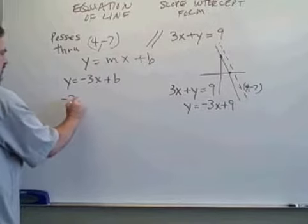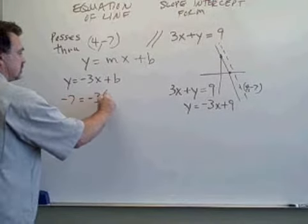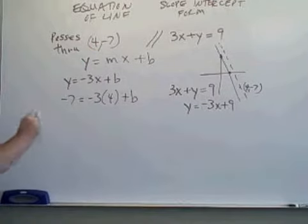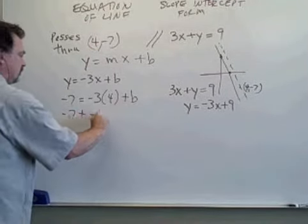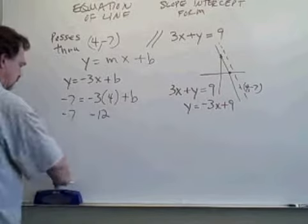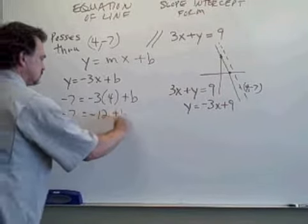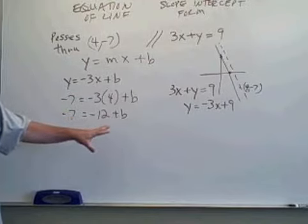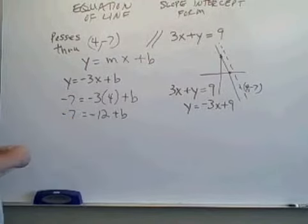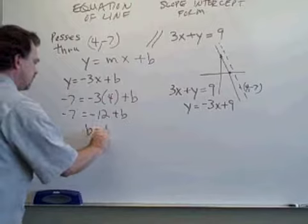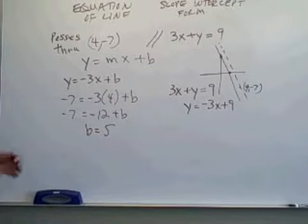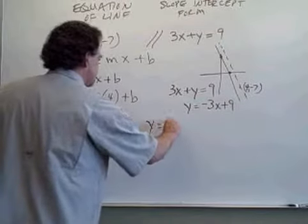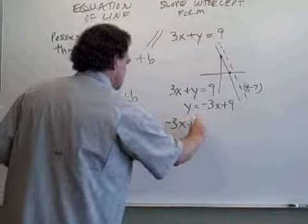y is negative 7. When x is 4, negative 7 equals negative 12 plus b. Adding 12 to both sides, I get b equals 5. And our equation is y equals negative 3x plus 5.